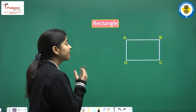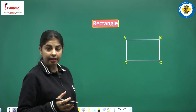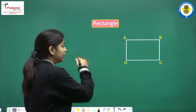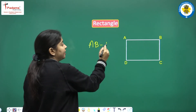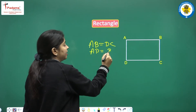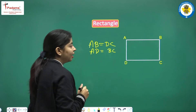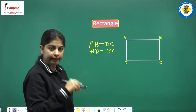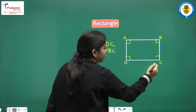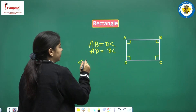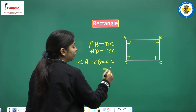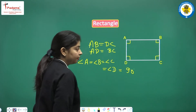Next, we have a rectangle ABCD. In the rectangle, opposite sides are equal: AB equals DC, and AD equals BC. Also, in a rectangle, all angles are 90 degrees — angle A equals angle B equals angle C equals angle D equals 90 degrees.